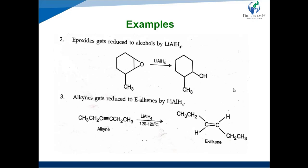The next point is epoxide reduction. Epoxides get reduced to alcohols with lithium aluminum hydride. The epoxide oxygen is converted into a hydroxyl (OH) group. For example, a cyclohexane epoxide derivative in the presence of lithium aluminum hydride has the epoxide opened and converted into an OH group, forming 1-methyl-2-hydroxycyclohexane.